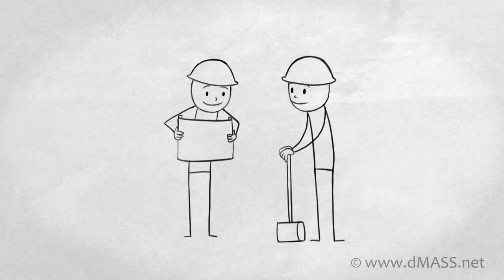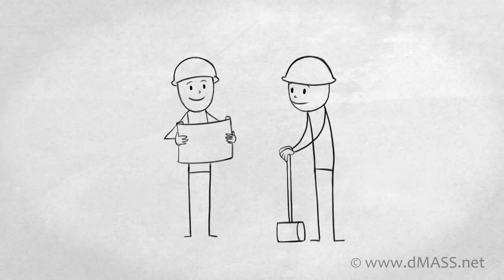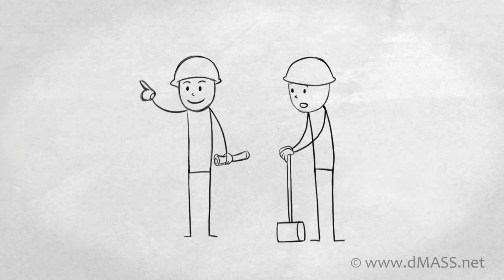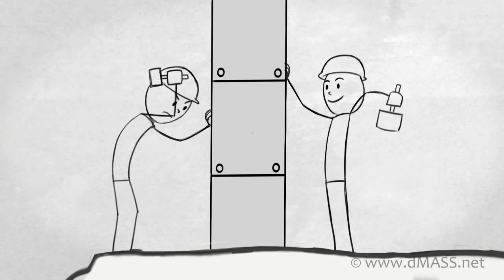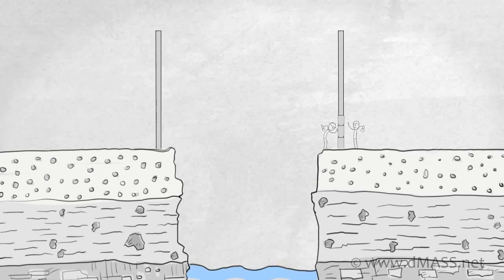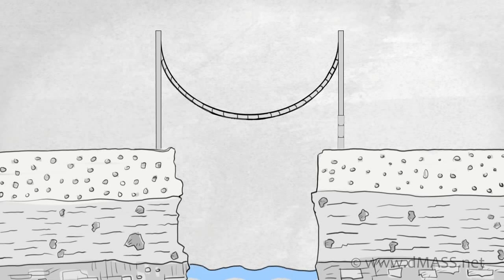Eventually people discovered that, wait, maybe you didn't need this iron arch at all. Maybe we could just take the steel cables, we could build two posts, put one at each side of the canyon, and drape steel cables over the posts. And when you did that, you have actually an inverted arch, an upside down arch.